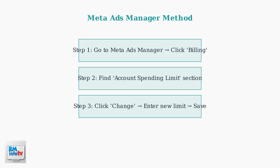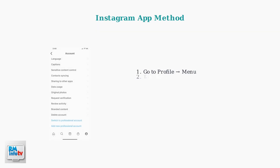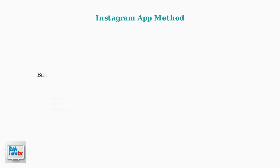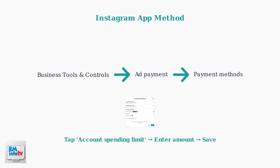The new limit will take effect immediately. Now let's look at how to change your spending limit directly through the Instagram app. Remember, you need a professional account for this method. Start by going to your Instagram profile and tapping the menu. Look for Account Type and Tools in the settings. If you don't already have a professional account, you'll need to switch to one by tapping Switch to Professional Account and following the setup process. Once you have a professional account, navigate to Business Tools and Controls, then select Add Payment and Payment Methods. Finally, tap on Account Spending Limit, enter your desired amount, and save the changes.